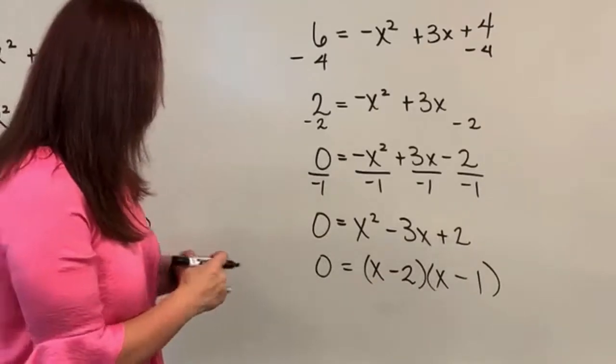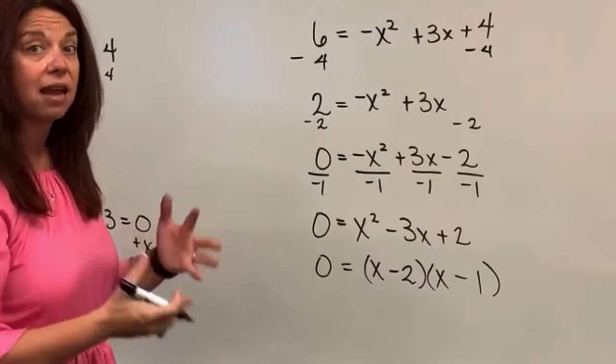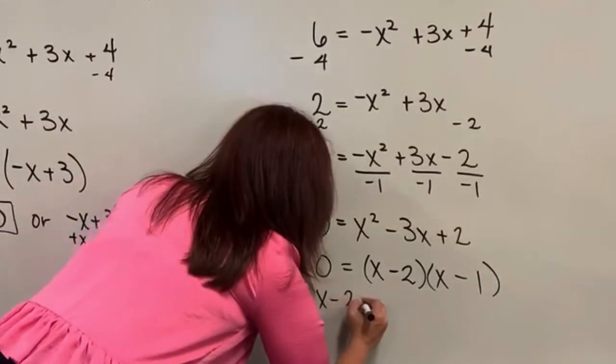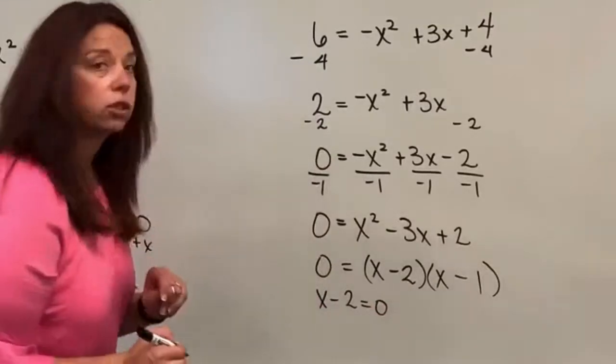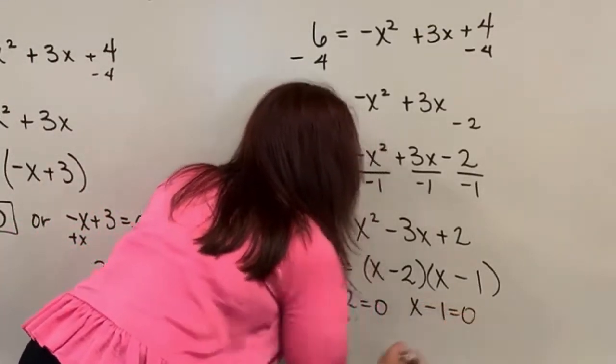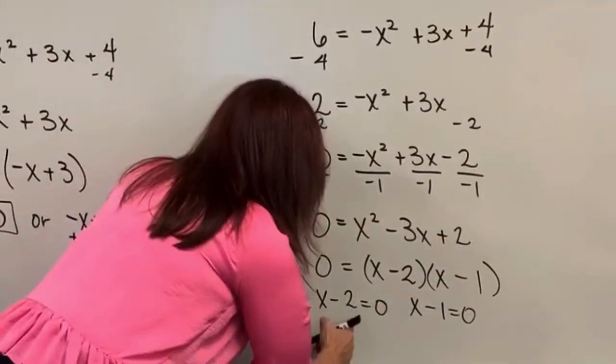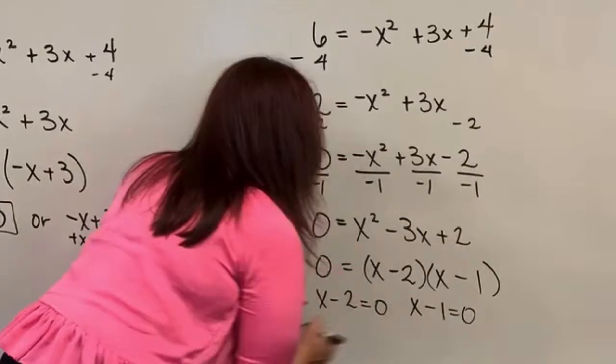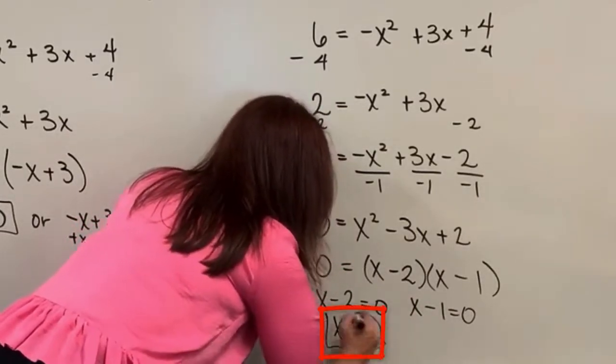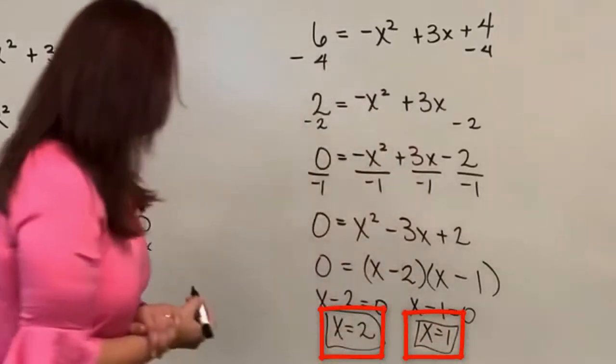Now, one more step here to do is I've got to take each of those binomials and set them to zero via the zero product property. So I have x minus two equals zero. I can finish solving that in just a second. And then I have x minus one equals zero. So those are my two equations. When I finish solving, I will add two over here. Add one on this equation. So I have x equals two as one input value. Over here, x equals positive one as the second input value.